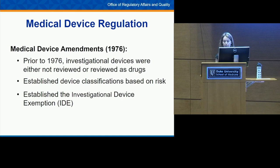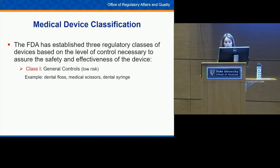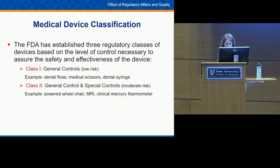With the Medical Device Amendments, FDA established three regulatory classes based on the level of control necessary to assure safety and effectiveness. Class I devices are low-risk — things like a toothbrush, sunglasses, or dental floss — and FDA determined that general controls are sufficient to assure their safety and effectiveness. Class II devices are moderate risk, such as an MRI or powered wheelchair, for which general controls alone are not sufficient, so special controls are also required.